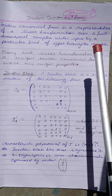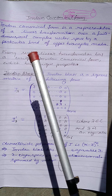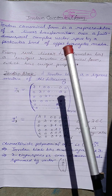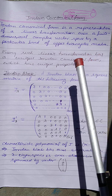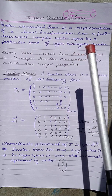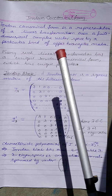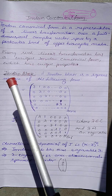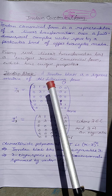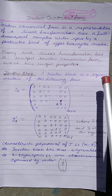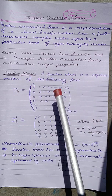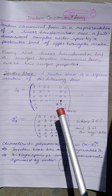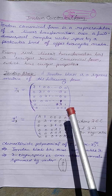Jordan canonical form is a representation of a linear transformation over a finite dimensional complex vector space by a particular kind of upper triangular matrix. The upper triangular matrix is the collection of Jordan blocks, as we discussed in our previous lecture. A Jordan block is a square matrix in which every diagonal element is the same and the super diagonal elements are all 1.